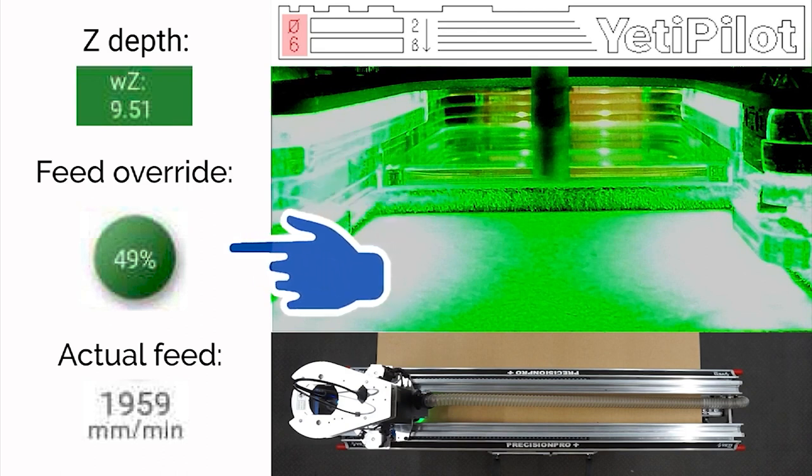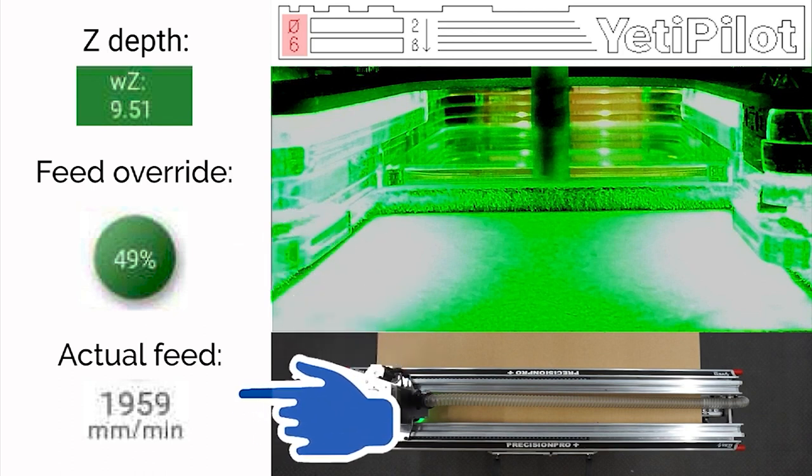This next item, Feed Override, is the most important value on this screen and that is what Yeti Pilot is changing. Feed is how quickly SmartBench moves the cutter in the XY plane, and Feed Override is a way of slowing the machine down or speeding it up. If you see 50% you know it's only allowed to go at half speed. If you see 200% you know SmartBench is allowing it to go at double the speed through the material. And actual feed is the number of millimeters per minute that the cutter is moving.